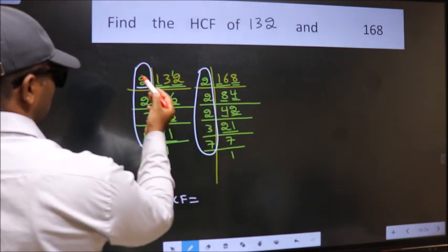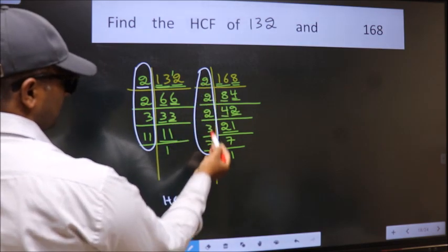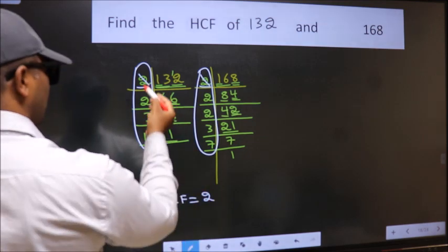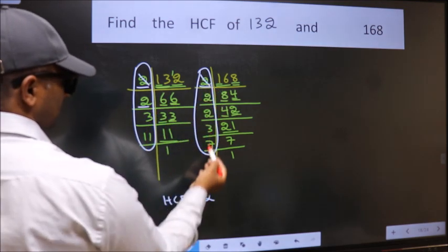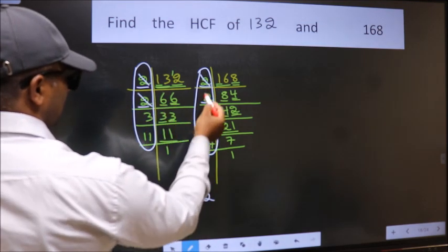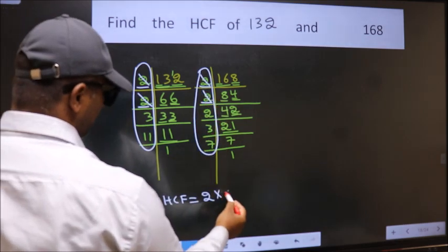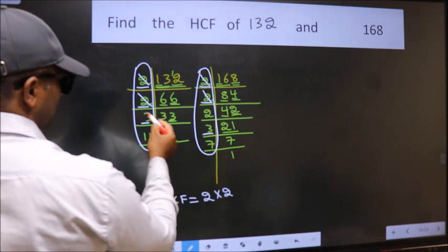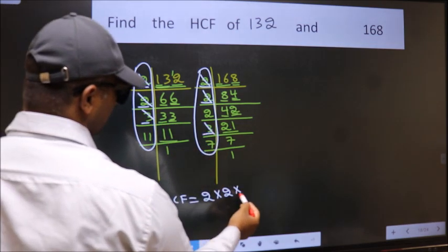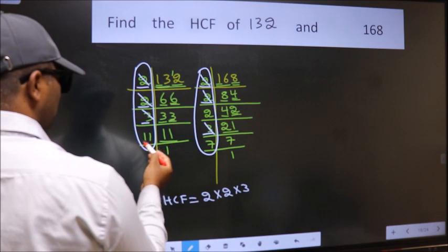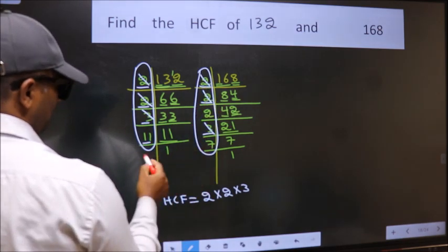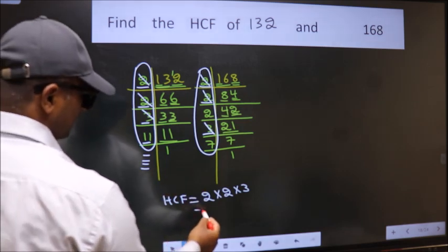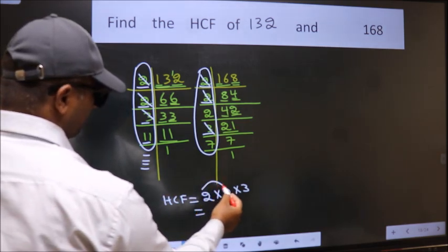Starting with the number 2. Do we have 2 here? Yes. So cut 2 right here. Next number 3. Do we have 3 here? Yes. So cut 3 right here. Next number 11. Do we have 11 here? No. No more numbers have been left out. So our HCF is 2 times 2, 4 times 3, 12 is our HCF.